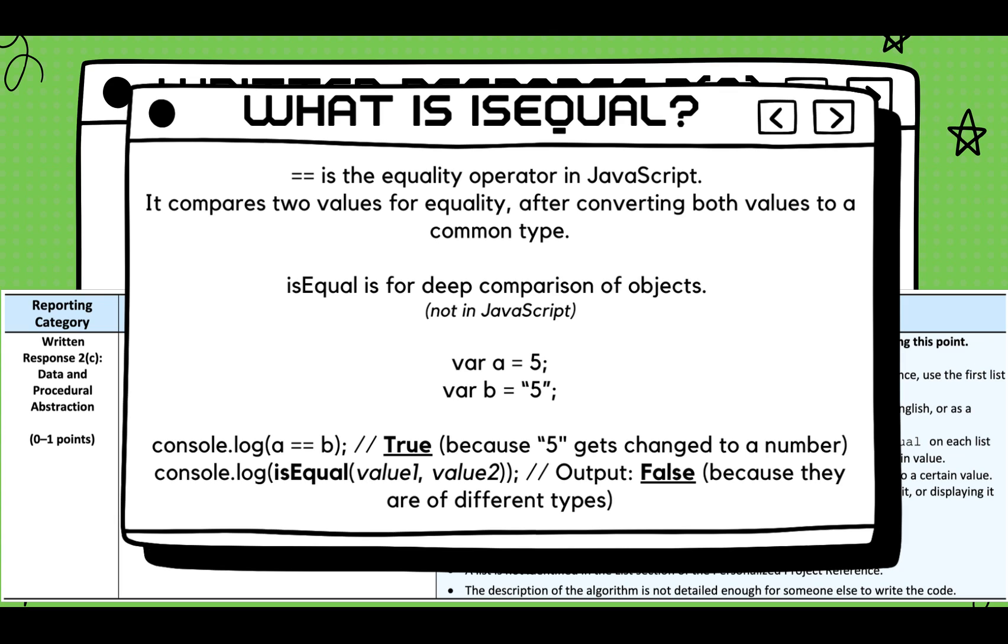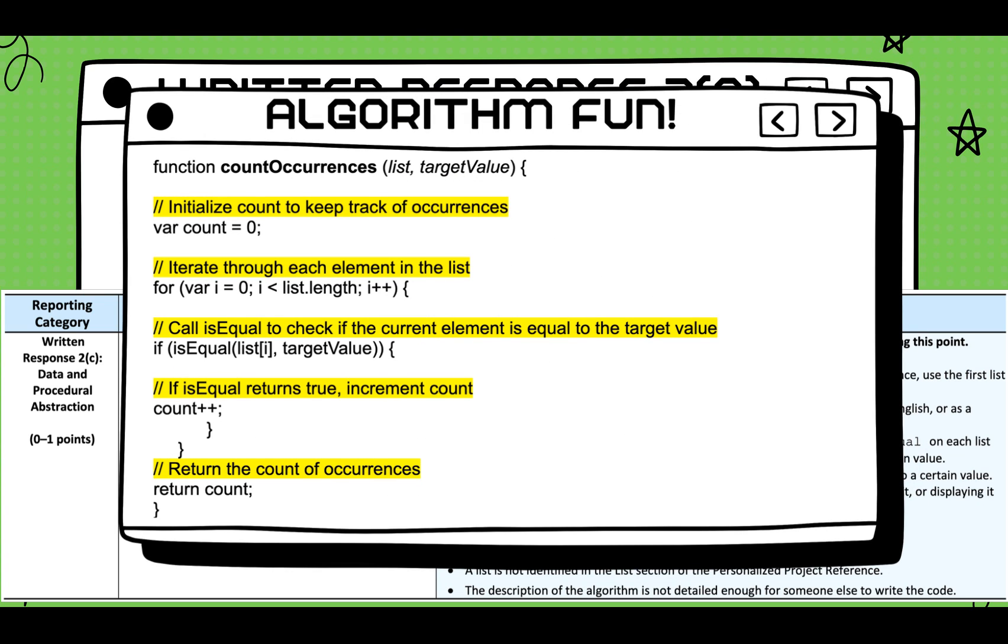IsEqual, for the purposes of this video and the create task, we're going to treat it as the equal equal. You probably use a conditional in your code. Greater than, greater than or equal to, less than, isEqual is just another type of conditional. Let's look at a hypothetical algorithm to better understand it.